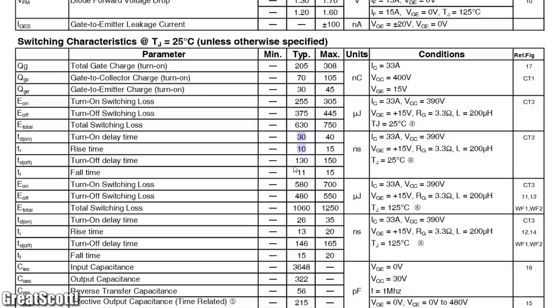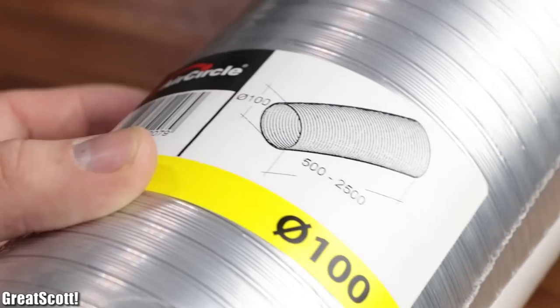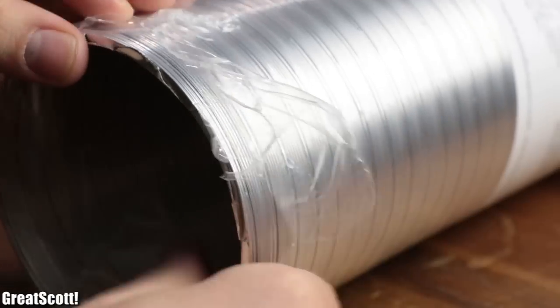Only problem is that such IGBTs only feature medium-fast switching times, which can be a problem since we are dealing with a resonance frequency above 400 kilohertz. So to decrease it, I got myself an aluminum air duct from the home improvement store.